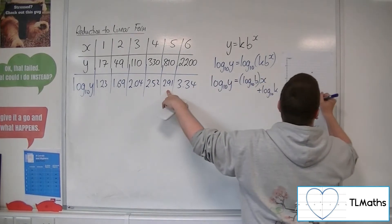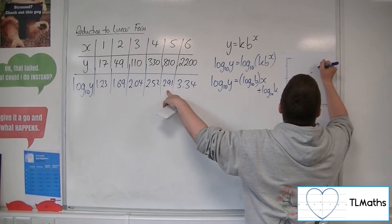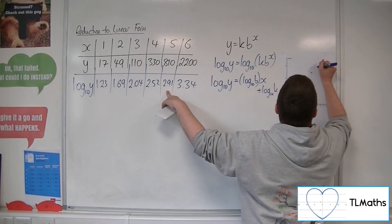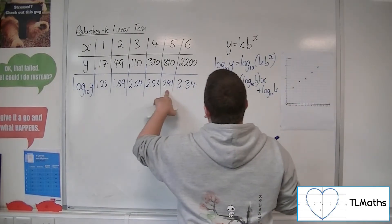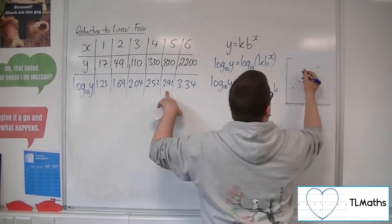5, 2.91. So 2.8, 2.9, something like that. So that one's a little bit off, isn't it? It was a little bit high.